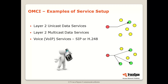After MIB upload, the OLT will typically set the ONU to different services. Three examples are: layer 2 unicast, layer 2 multicast, and voice services — specifically voice over IP delivered directly from the ONU, not from an external gateway. There are separate processes for setting up SIP or H.248, with some steps in common and some differences. Let's look at layer 2 multicast as an example.